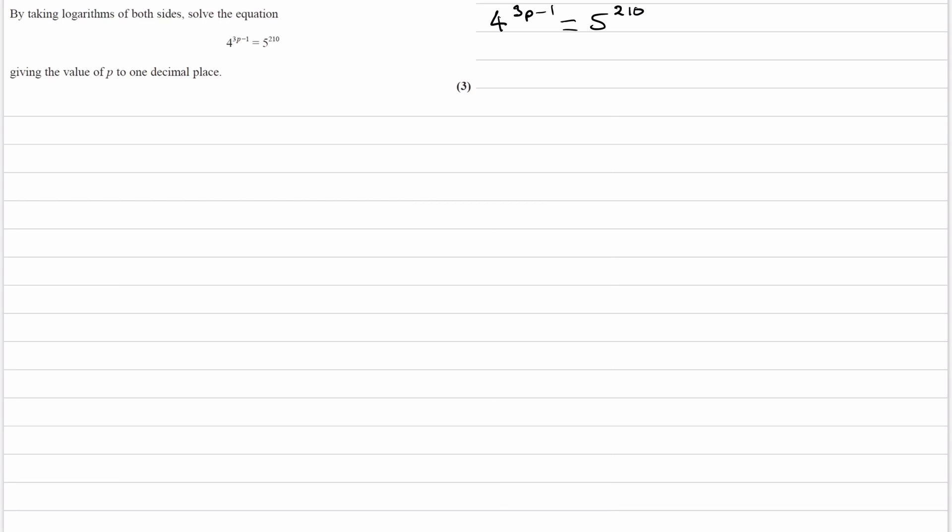All right, so we want to take logs of both sides. So then you want to think about what kind of base would we have to use. We have a few different options. We could just use log to the base 10 as one of our options, which can also just be written as just log of whatever. That's one option.